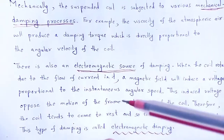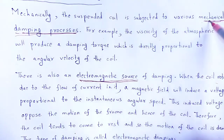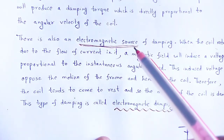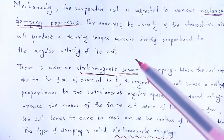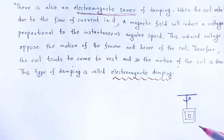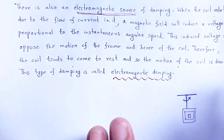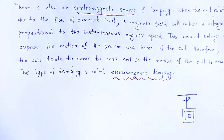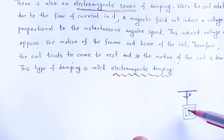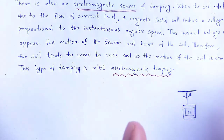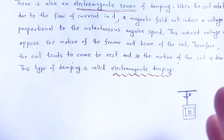Two types of damping are observed here: one due to mechanical processes and another due to electromagnetic source. These two are responsible for damping the coil. The induced voltage causes eddy currents, which are produced in the metallic frame due to the change of magnetic flux linked with the frame.